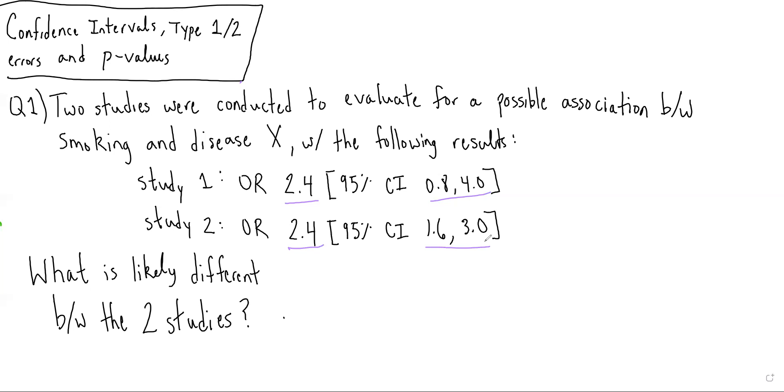If you recall from the lecture, if a 95% confidence interval includes the null value, then it is not a statistically significant result. And because we're looking at an odds ratio, which is a ratio measure in this case, X over Y with X equaling Y, we would expect the null hypothesis to be an odds ratio of 1.